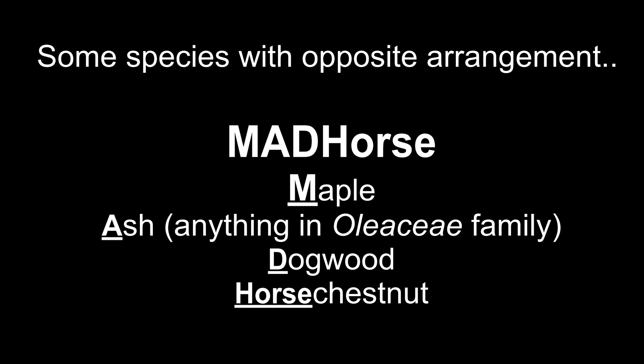If you encounter a species with opposite arrangement you're in luck because the list of options has gotten a lot smaller. Trees with alternate arrangements are so much more common that there's a mnemonic to help you remember the ones that have opposite arrangements. The mnemonic is MAD Horse: M stands for maple, A for ash, D for dogwood, and horse for horse chestnut. One caveat is that the A does stand for ash, but all the species in that family, the Oleaceae, also have opposite attachments.